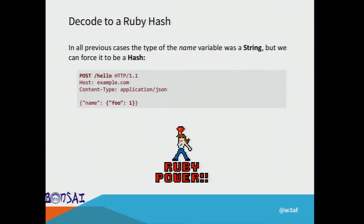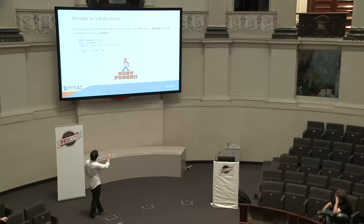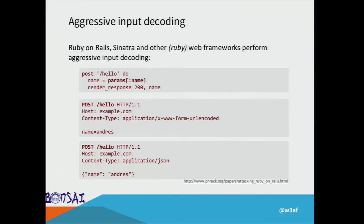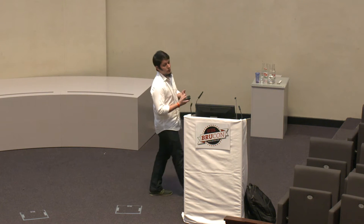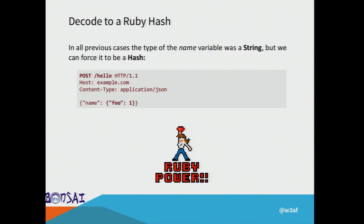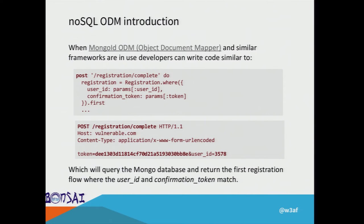There's something interesting we can do: send an HTTP request with a POST body where the name variable, which was previously a string, is now modified so its type becomes a hash — a Ruby hash. That's an important feature to keep in mind.